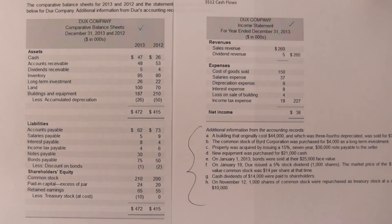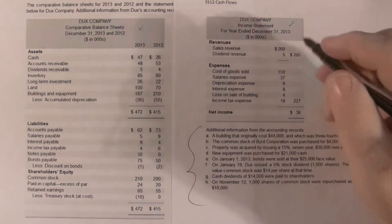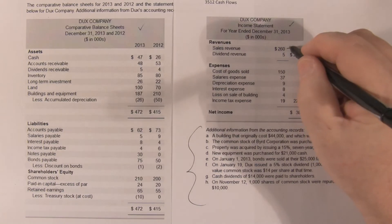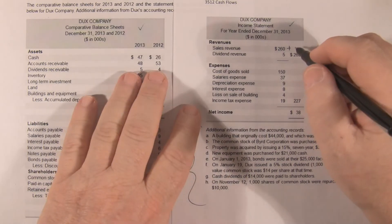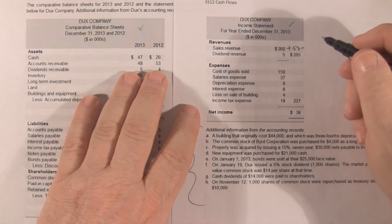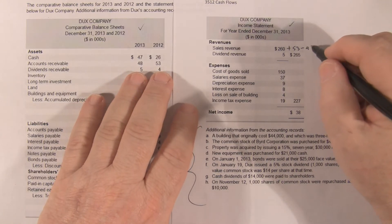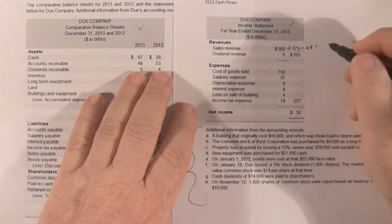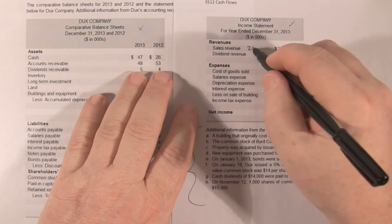Cash from customers. We always start with that. So that's sales plus the beginning accounts receivable, which is 53, minus the ending accounts receivable, which is 48. So cash from customers, 265.